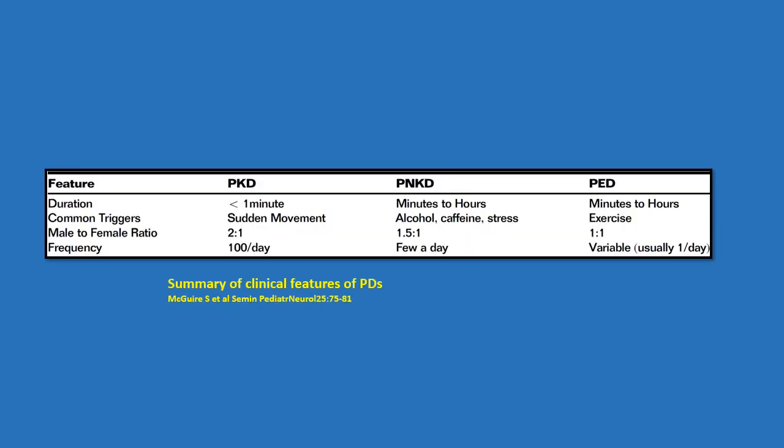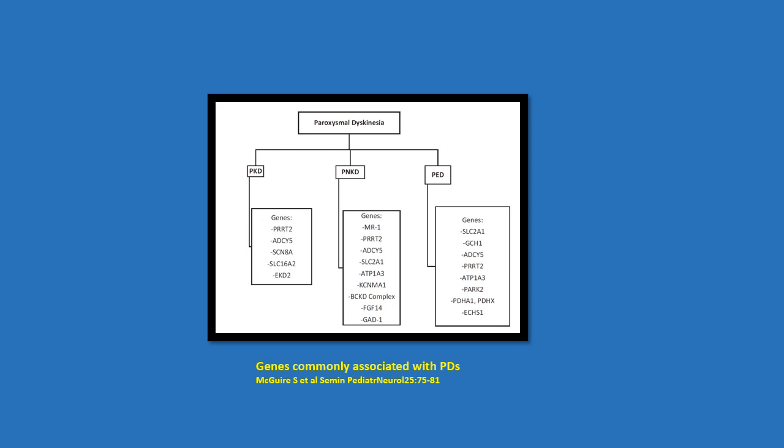This table shows a summary of the clinical features of the various kinds of paroxysmal dyskinesias. This figure shows the genes most commonly associated with the paroxysmal dyskinesias.